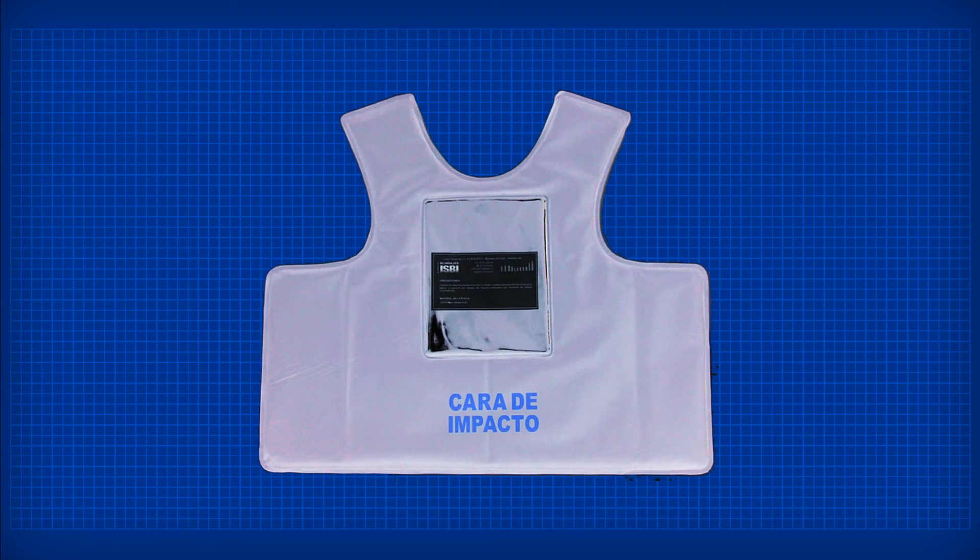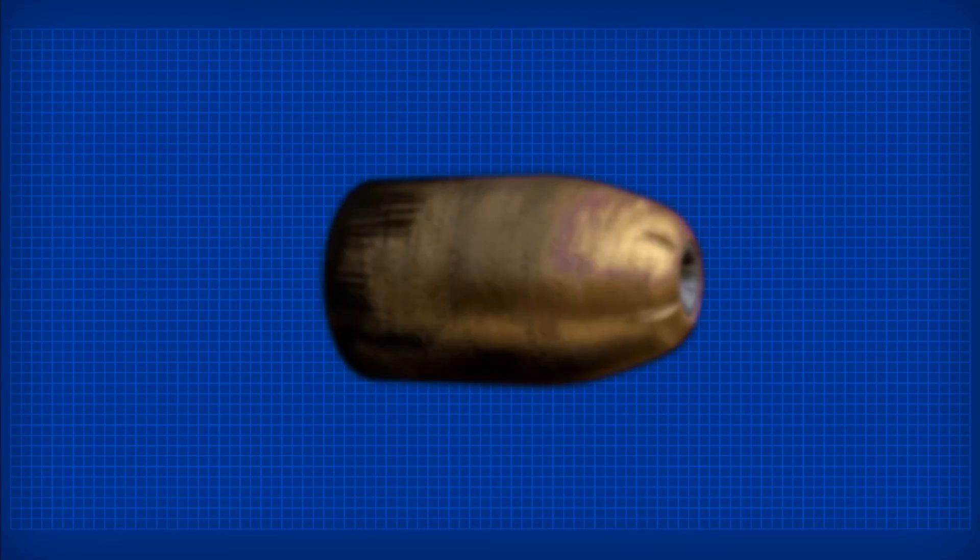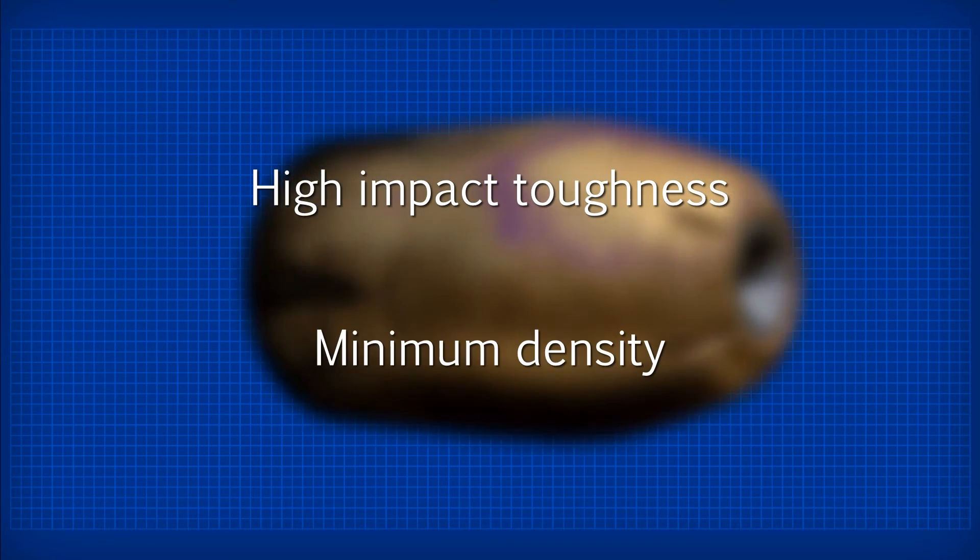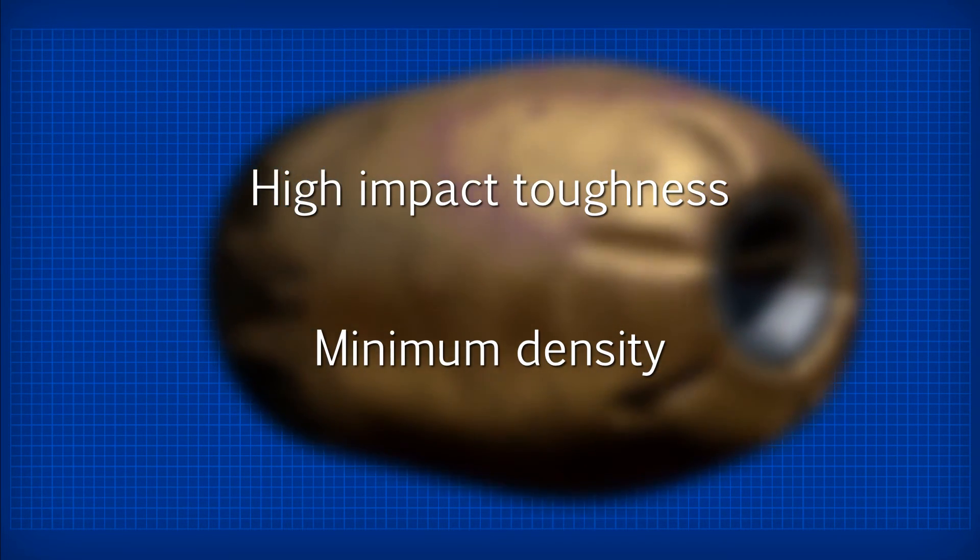Let's take a look at another example - bulletproof vests. They need a high-impact toughness to absorb the energy of a bullet and a low density, so the wearer is not significantly weighed down.